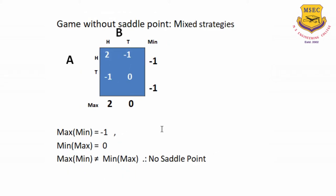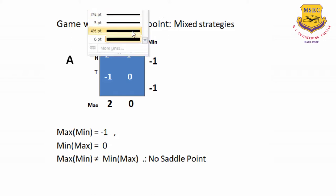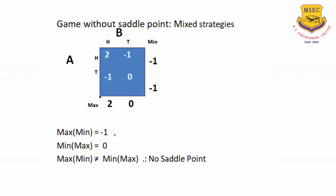Suppose if the game does not have a saddle point — that means there are no fixed strategies which the players can play — then we have to play the mixed strategies. Now let's try to identify this problem where A is playing with head and tail, B is playing with head and tail strategies. In this case, we see that max-min: when A is playing with the head strategy, the minimum value is minus 1, and the minimum of the second row is also minus 1, so max of minimum equals minus 1. When B is playing H, the maximum value is 2; when B is playing T, it is 0. So min-max equals 0. That means max-min is not equal to min-max, therefore there is no saddle point.